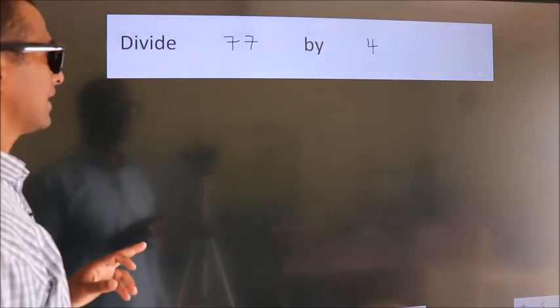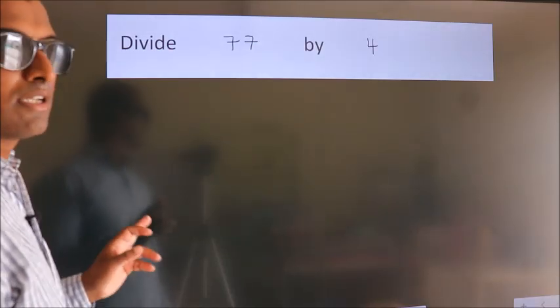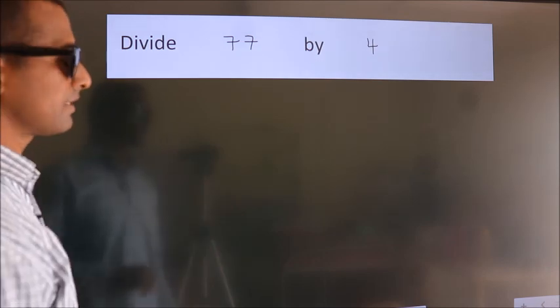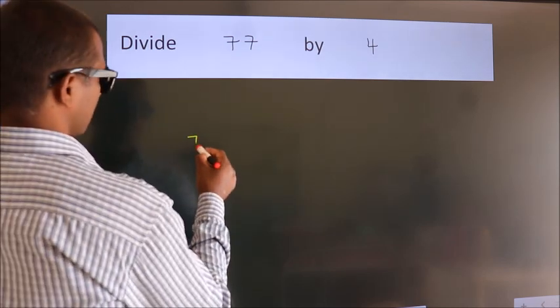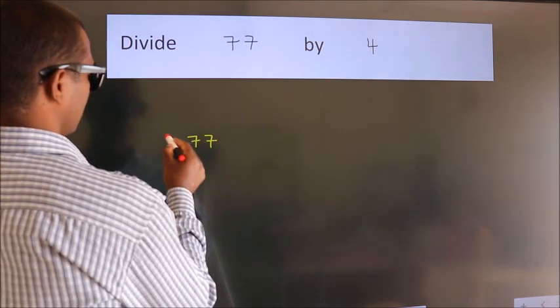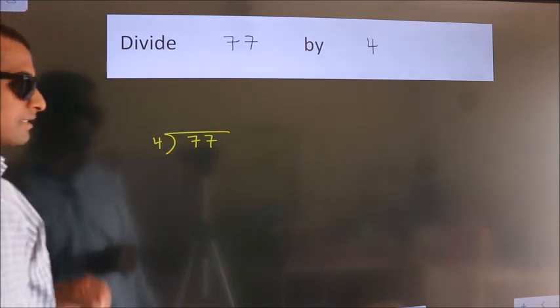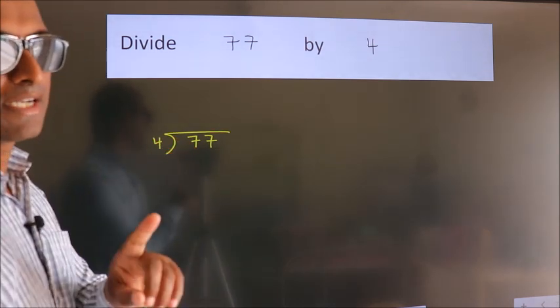Divide 77 by 4. To do this division, we should frame it in this way: 77 here, 4 here. This is your step 1.